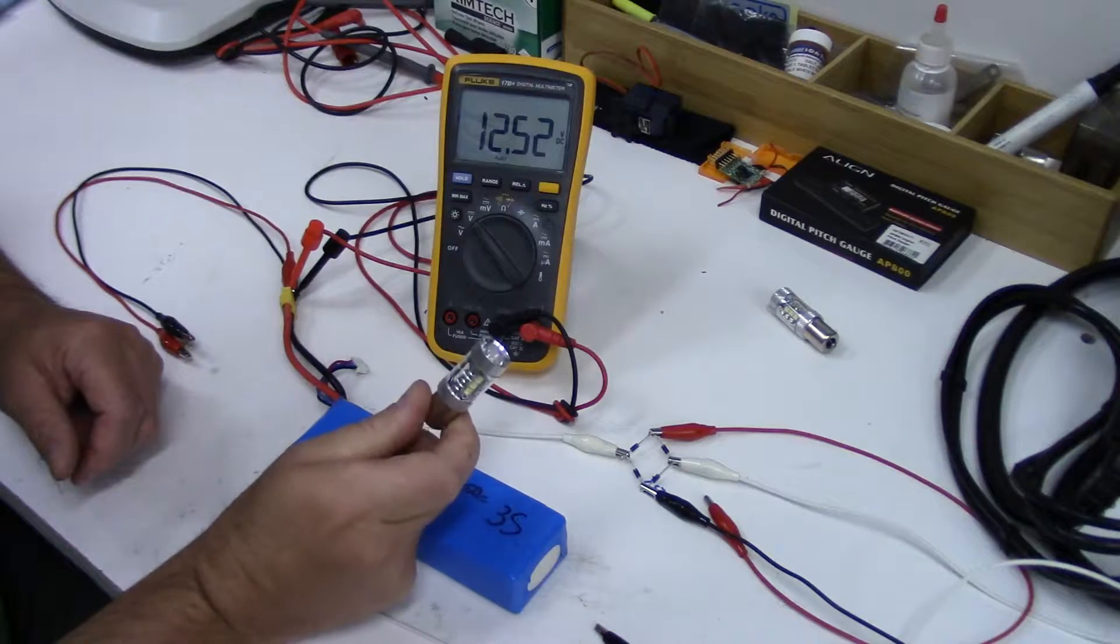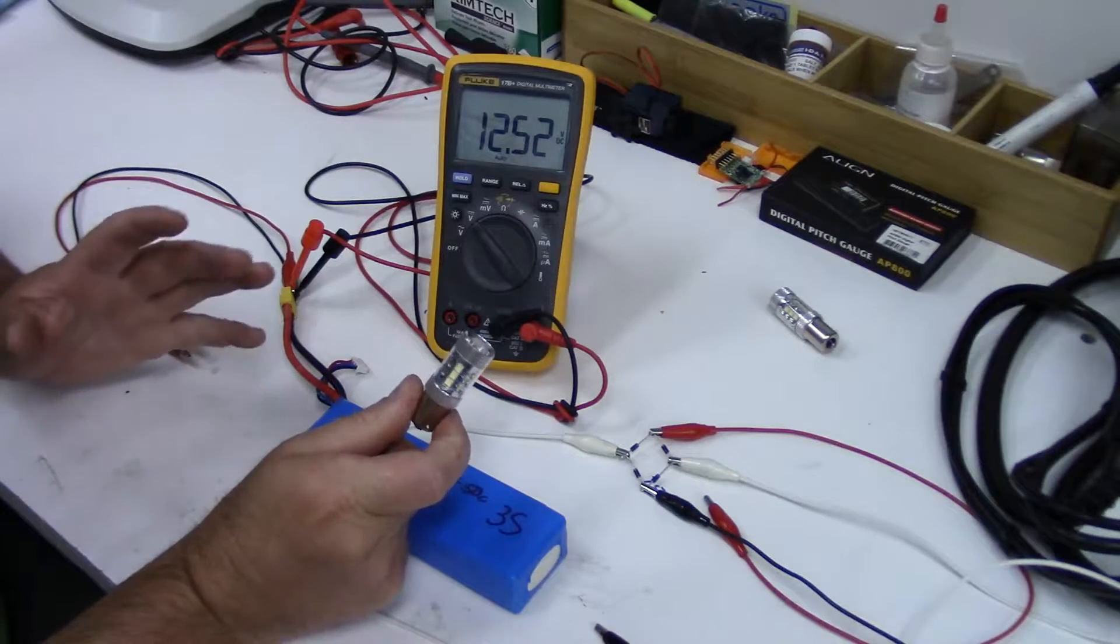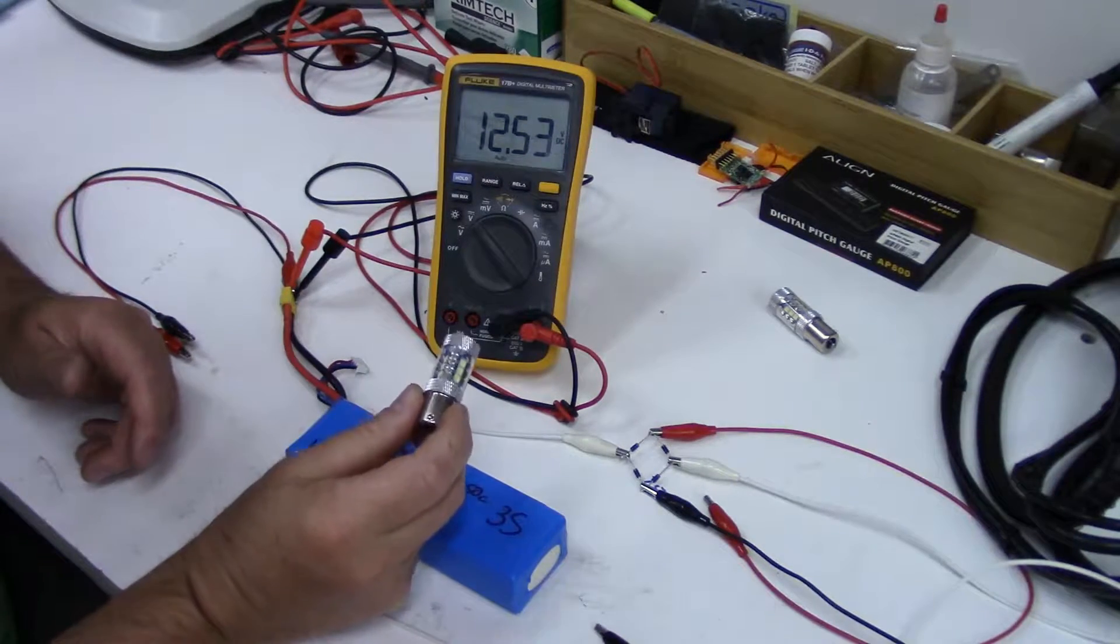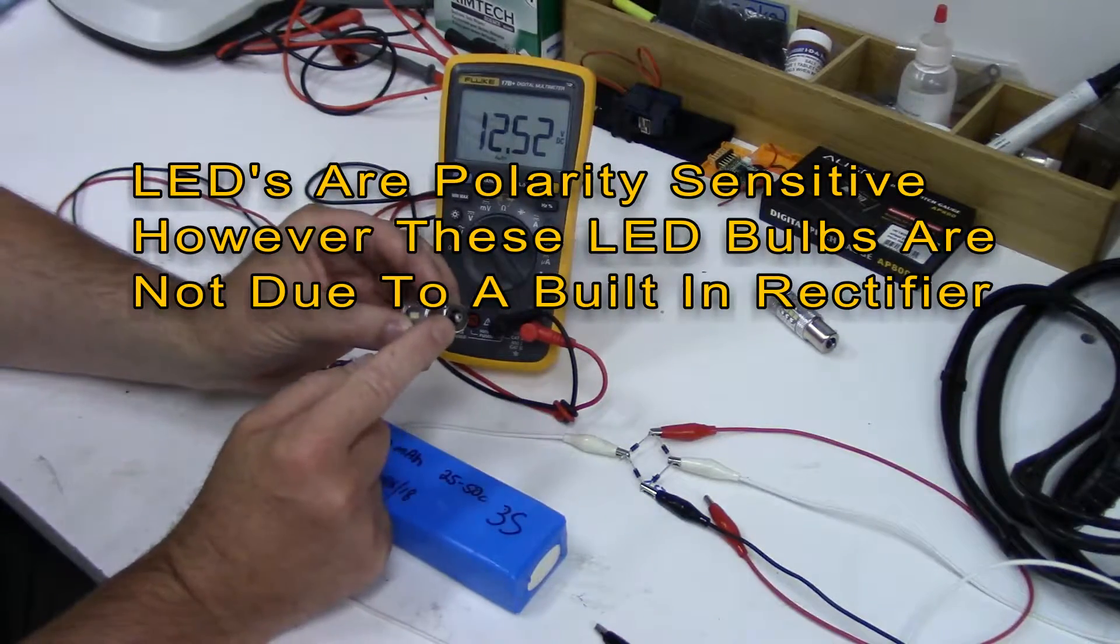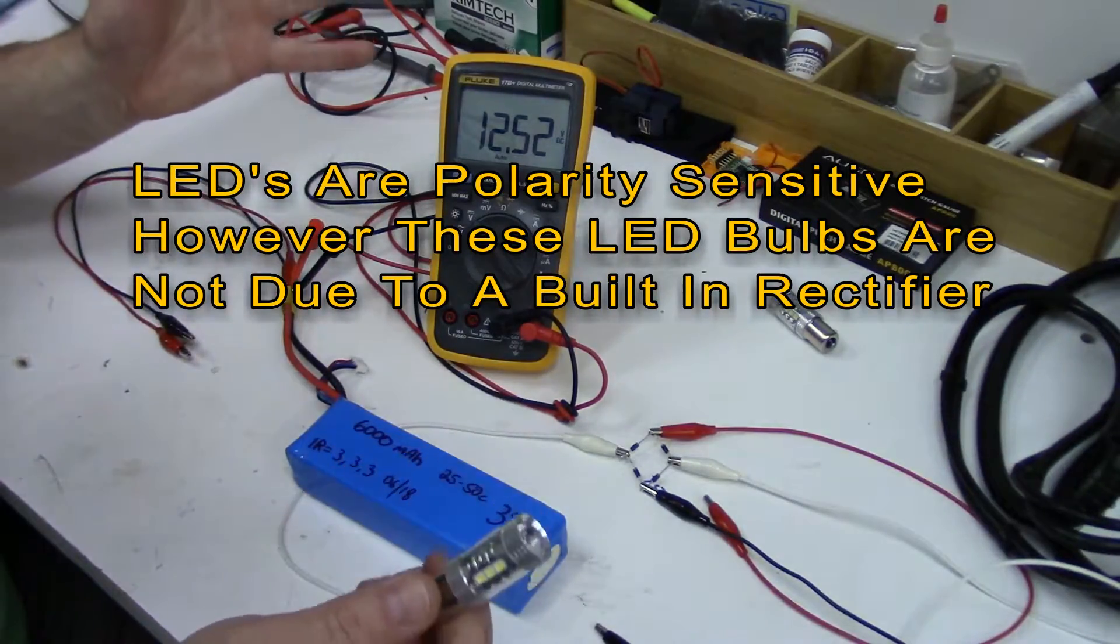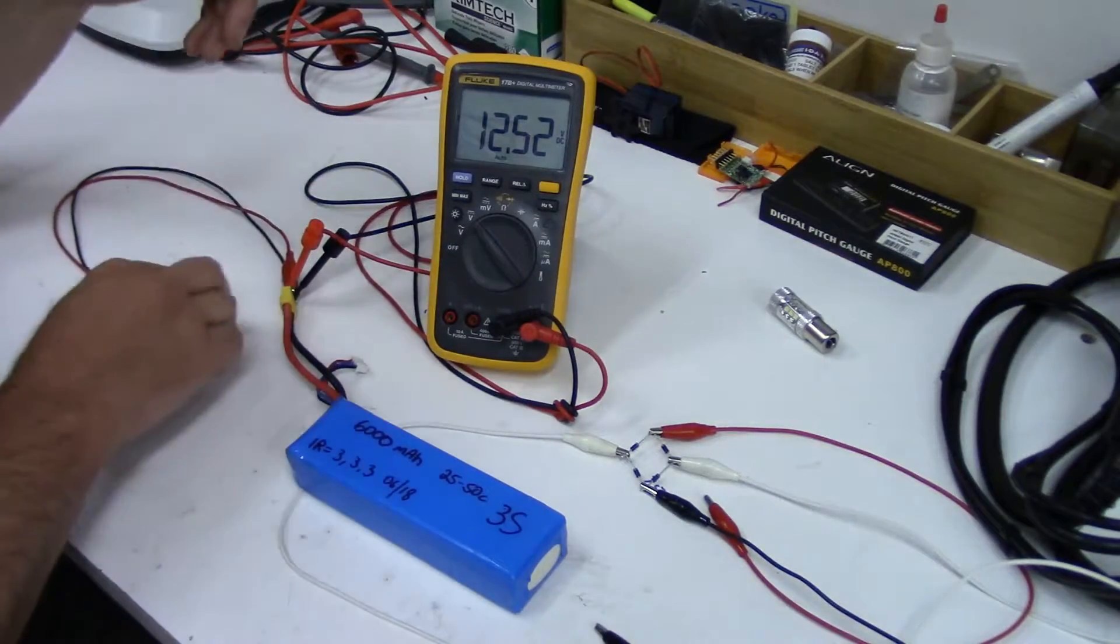Okay, so the first thing we're going to address with these eBay 1156 bulbs is my error where I said LEDs are polarity sensitive so you have to make sure this is negative and this is positive. That's not the case however. And I wondered if you hooked them up backwards if it would blow the bulb. So let's try it again.